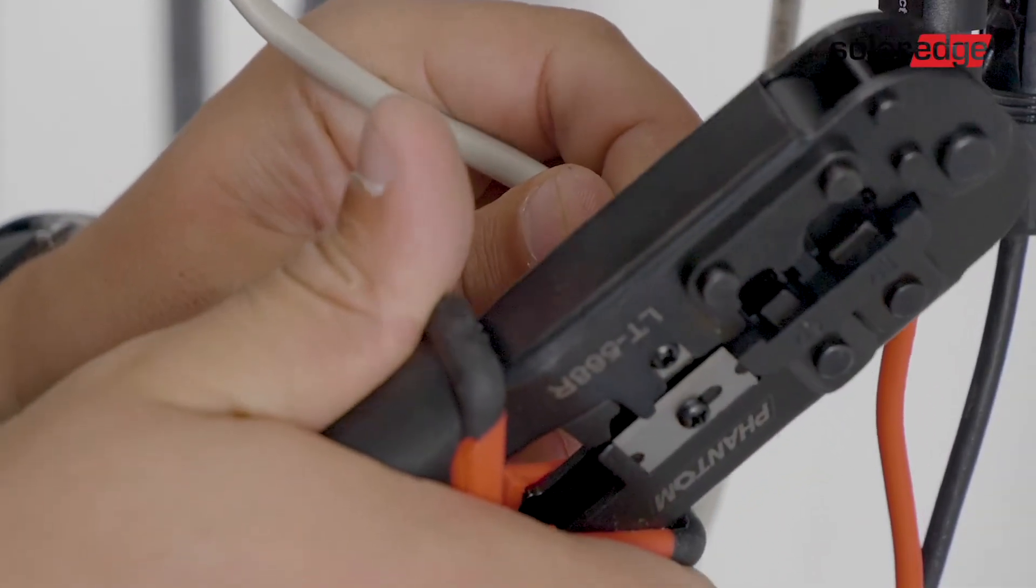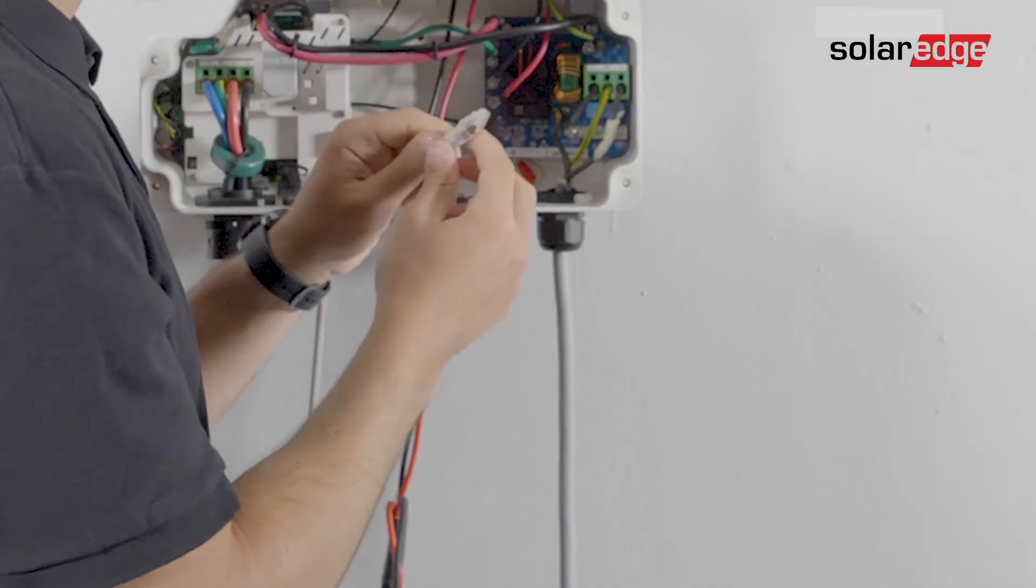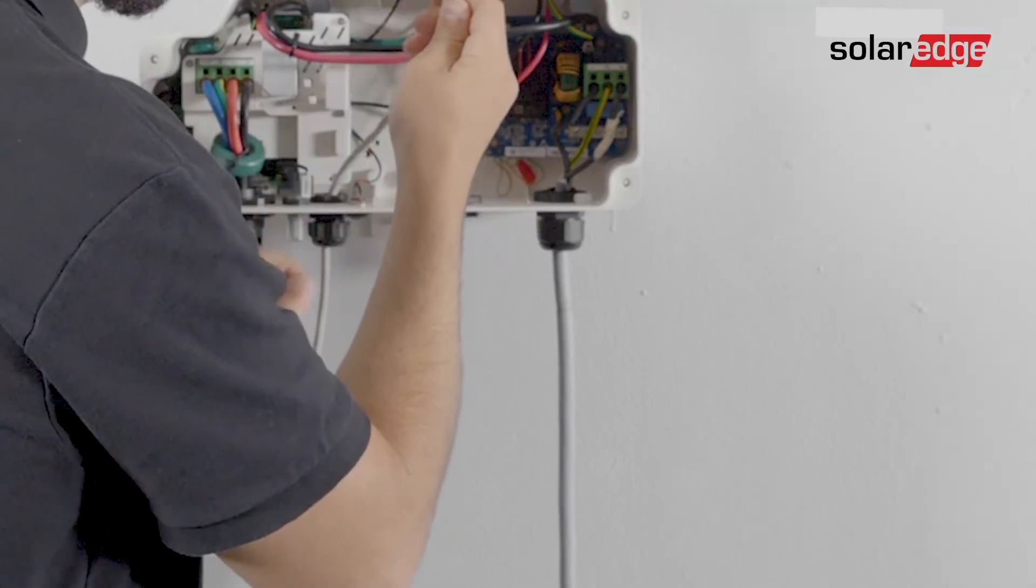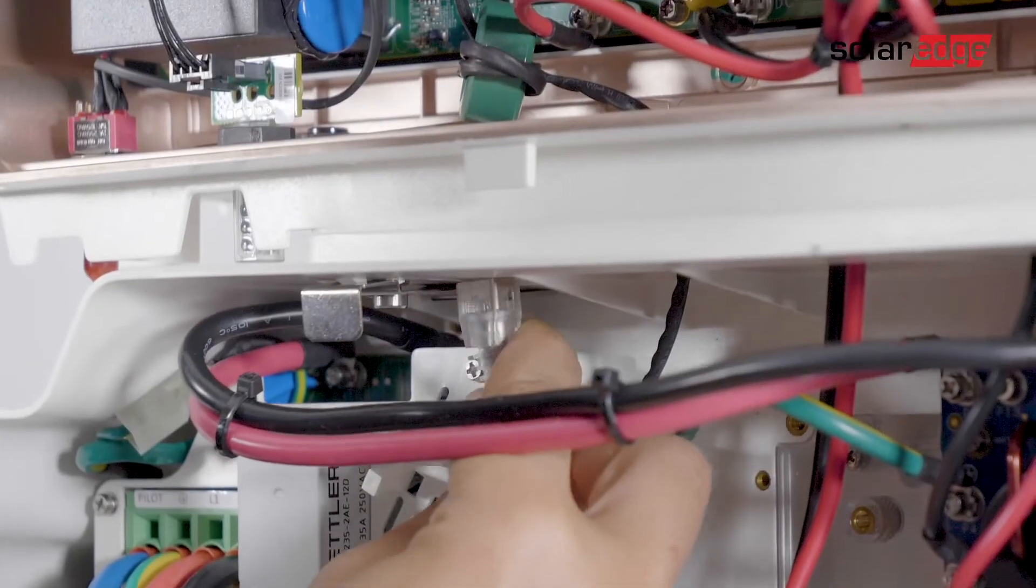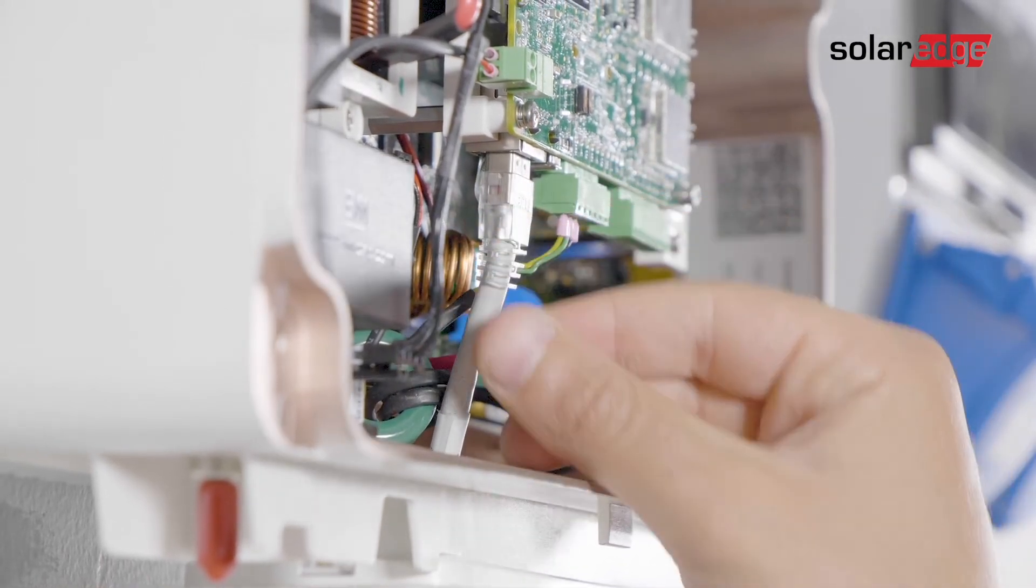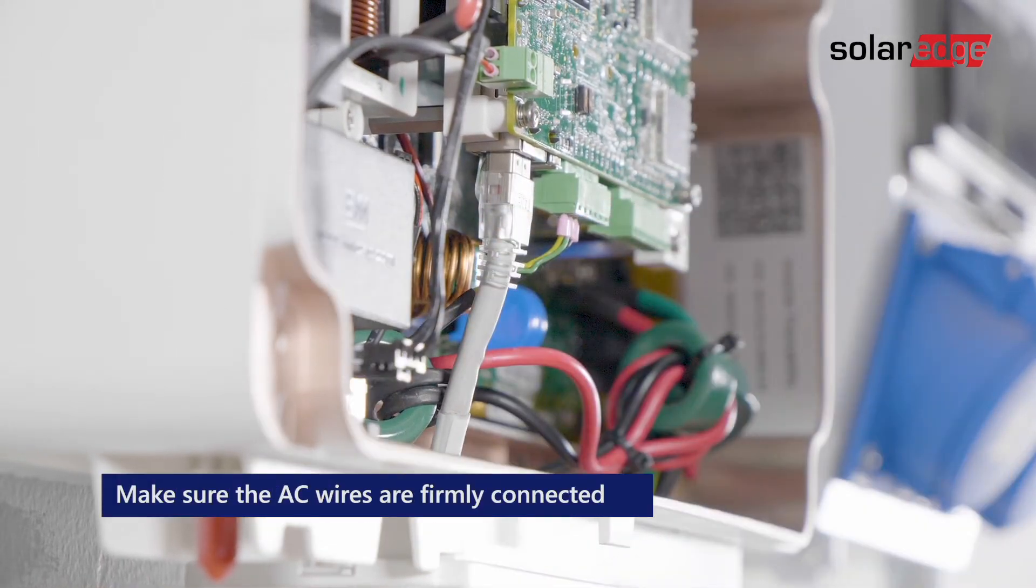For Ethernet use CAT5 or CAT6 twisted pair cable type with a RJ45 connector. Finally, connect the Ethernet cable to the RJ45 interface on the communication card.